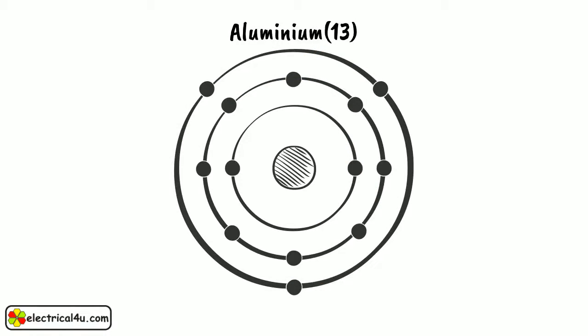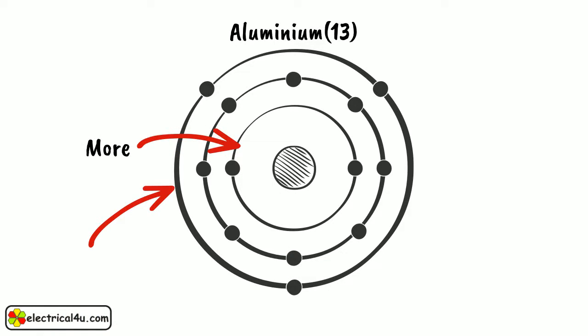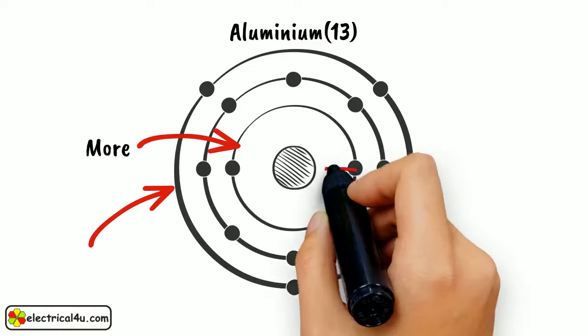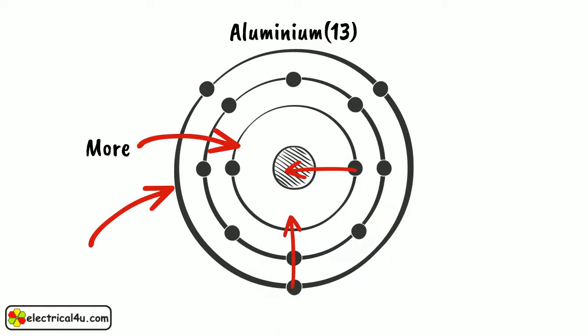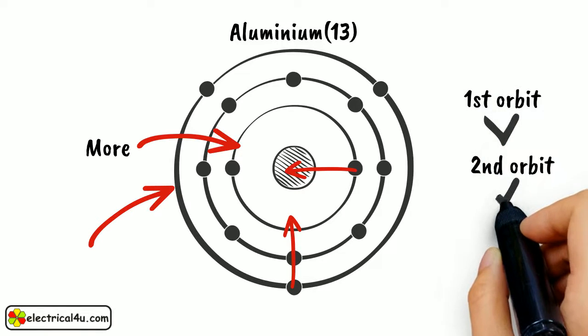The structure of an aluminum atom is shown in this figure. A definite amount of energy is required to remove the electron from its orbit. The energy required to remove the electron from the first orbit is much more compared to the energy required to remove the electron from the outer orbit. This is due to the fact that the force of attraction exerted by the nucleus on electrons in the first orbit is much more compared to the force of attraction exerted on electrons of the outer orbit. Similarly, the energy required to remove the electron from the second orbit will be less compared to the first orbit and greater than the third orbit.